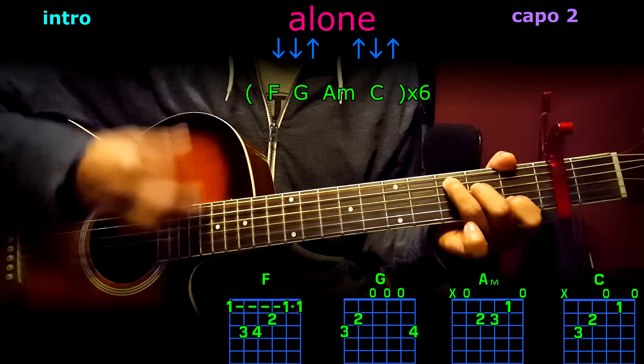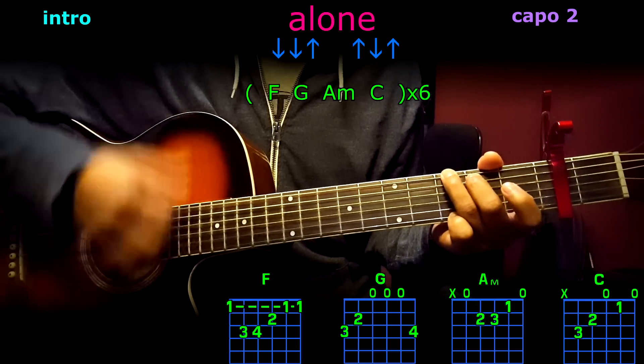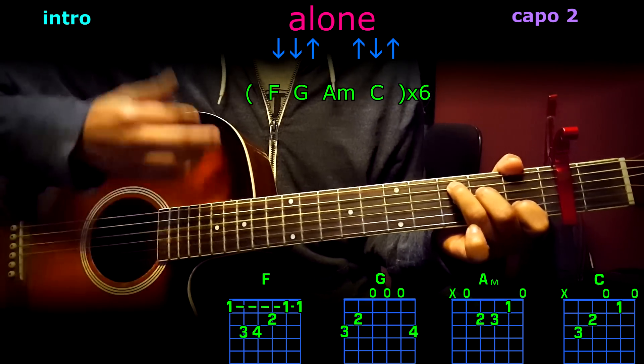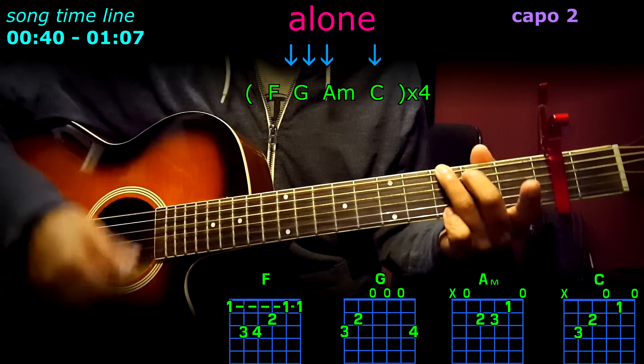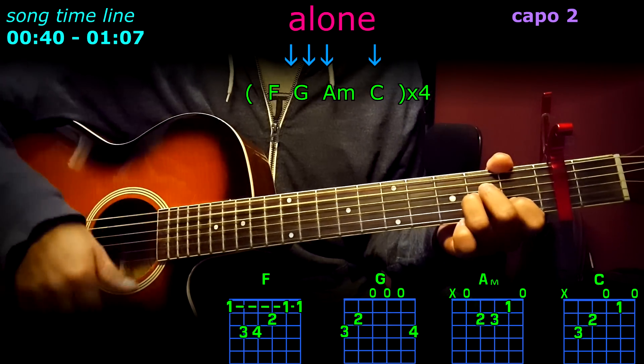C, F, G, A minor. And now F four times: one, two, three, four. G: one, two, three, four, A minor, C.